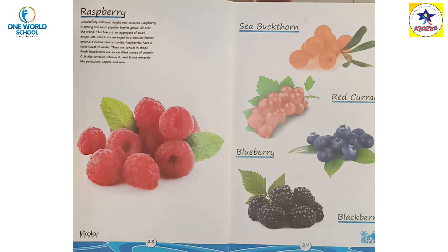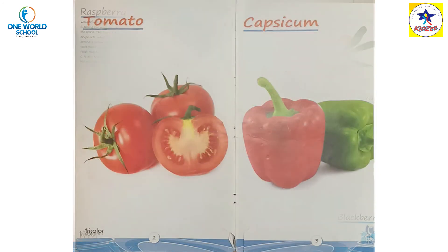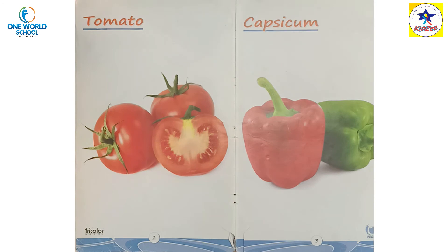यह सारे जो हमने pictures देखे, वो किसके थे? Fruits के थे। Yes. अब हम देखेंगे pictures of vegetables। Vegetables वो होता है जो मम्मा हमें cook करके खिलाती हैं, और कुछ vegetables ऐसे भी होते हैं जो हम raw, कच्चा भी खा सकते हैं, सलाद में। तो vegetables बहुत healthy होता है — अगर मम्मा आपको दें तो आपको खाना है, मना नहीं करना है।